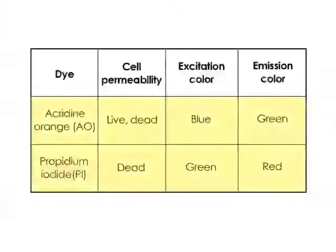Acridine orange and propidium iodide are nucleic acid binding dyes. They produce strong fluorescence after binding to DNA. AO is permeable to both live and dead cells. PI is only permeable to dead cells.